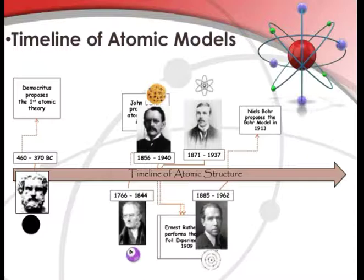Timeline of atomic models: Democritus proposed the first atomic theory in 460 to 370 BC, then John Dalton, then J.J. Thomson, then Rutherford, and Bohr theory. This is the timeline of atomic structure.